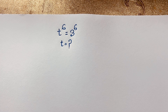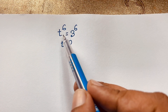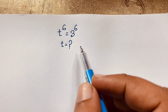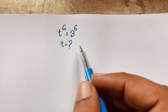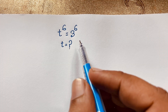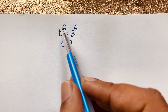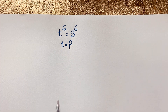Hello everyone, welcome to Russia's classroom. Today we have an interesting exponential math problem: t to the power 6 is equal to 3 to the power 6. What is t? If I apply the exponential formula, you can say the exponents are equal, so the bases are equal — t is equal to 3. This is our final answer.